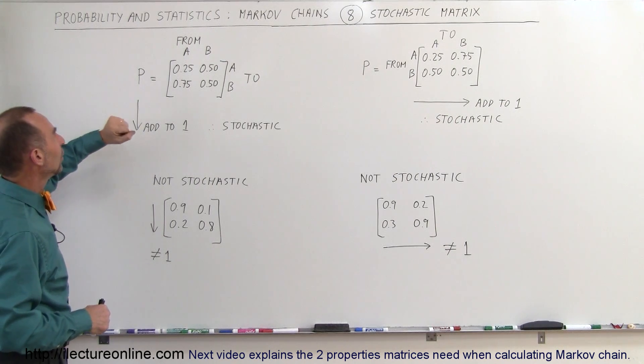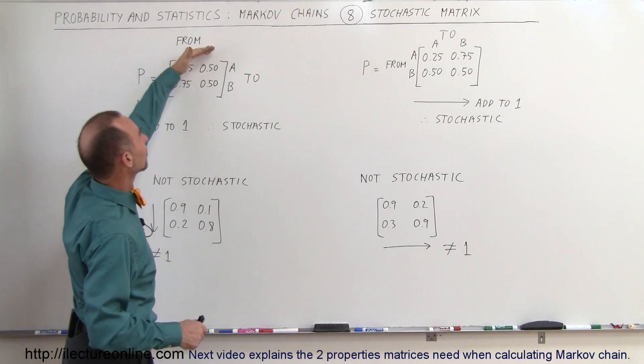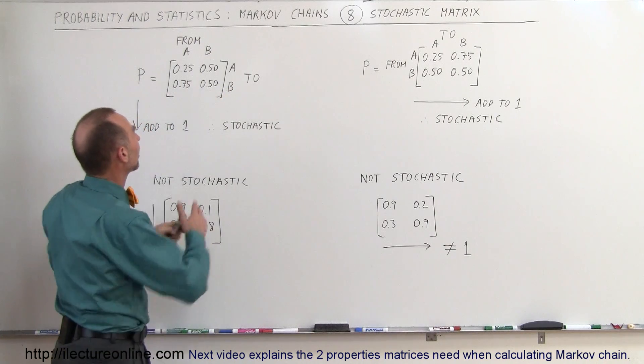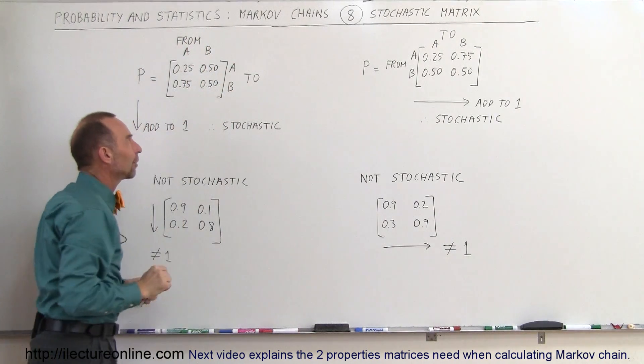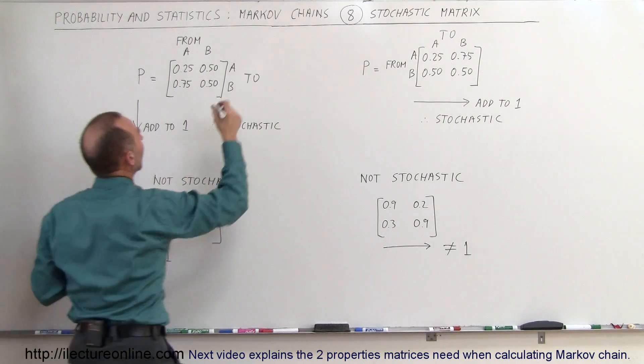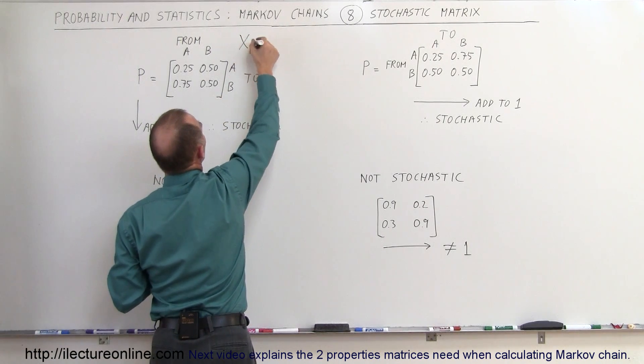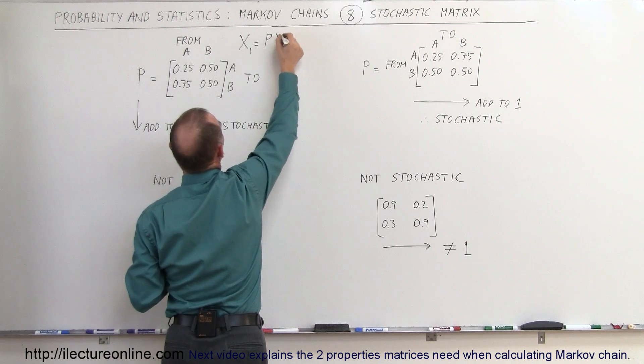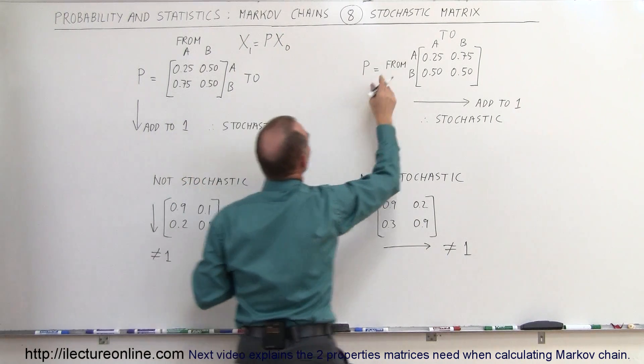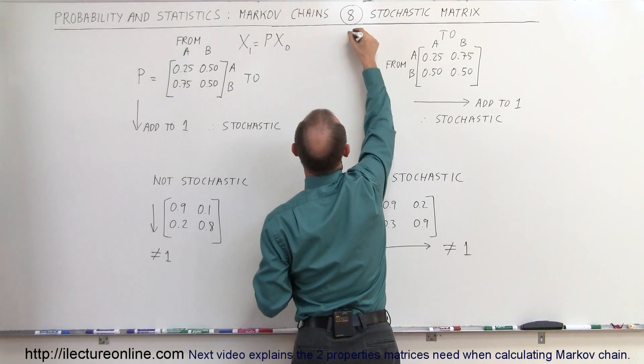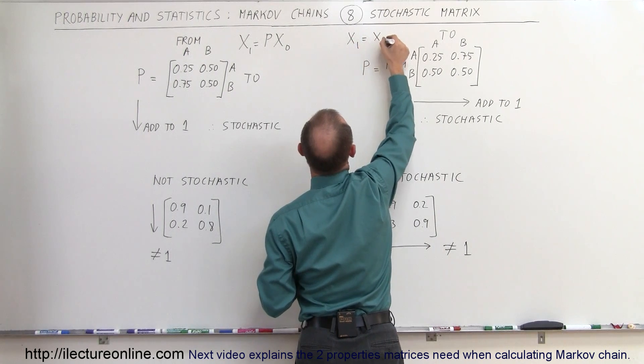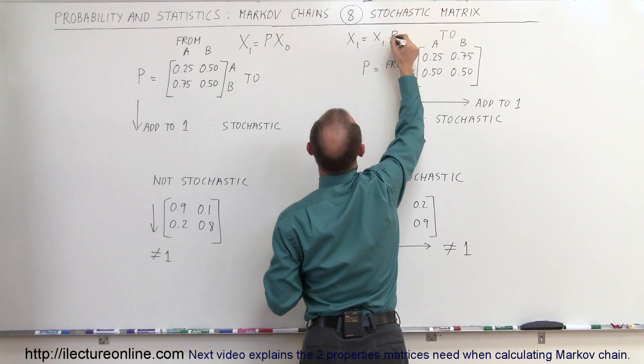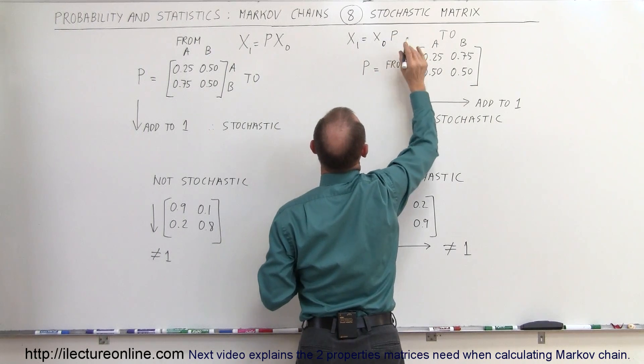But the method that we've been using where we have from at the top to at the right side. In this case we know that the next state is equal to the probability matrix times the initial state. Here we have the case where the next state X sub 1 is equal to the initial state X sub 0 times the probability.